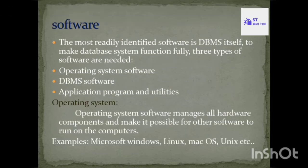The next component is software. Software is nothing but a collection of programs. Each program is used to perform one task, and software performs several tasks because it is a collection of programs. Software is divided into three types: operating system software, DBMS software, and application programs and utilities.